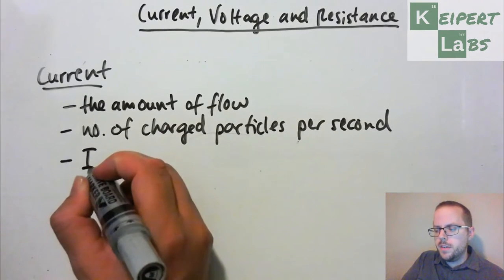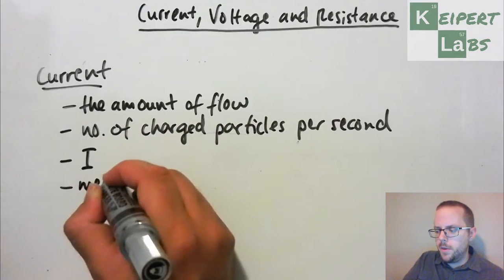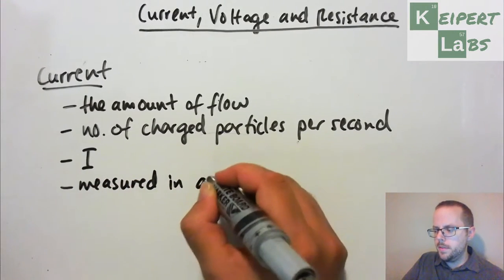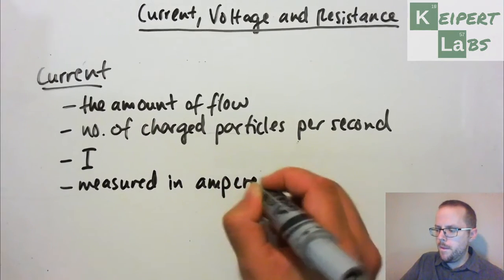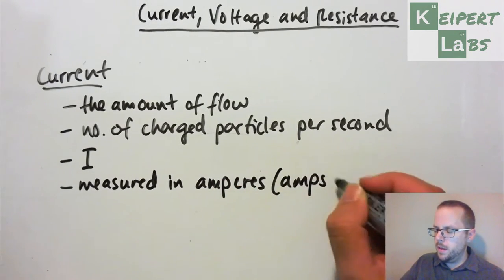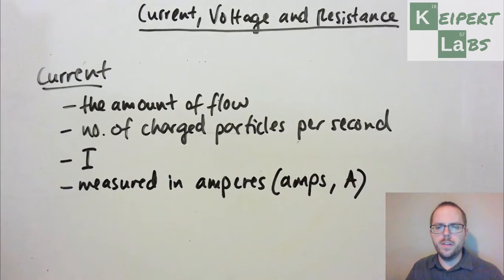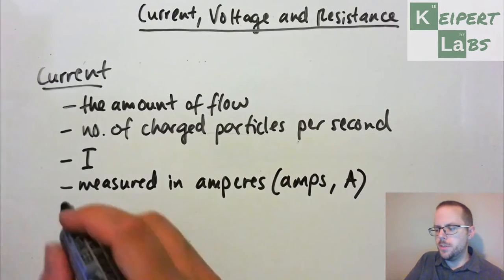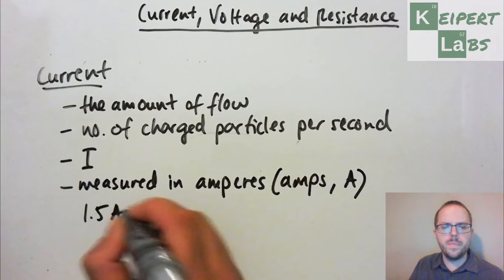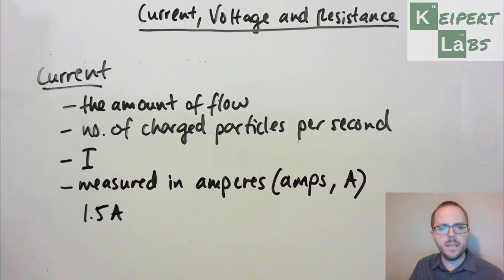So it has the symbol of I, and it's measured in a unit called amperes, which is known as amps for short, and is given the symbol of A for its unit. So maybe we might be talking about a current of 1.5 amps. So the amount of flow, that is the number of charged particles for every second.